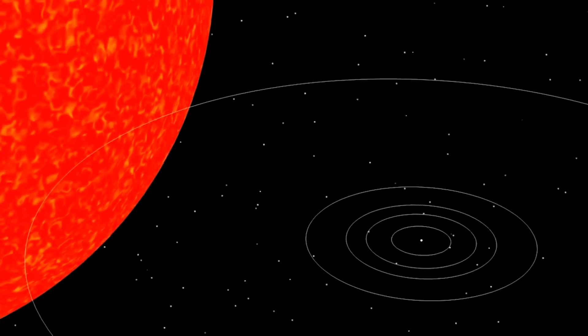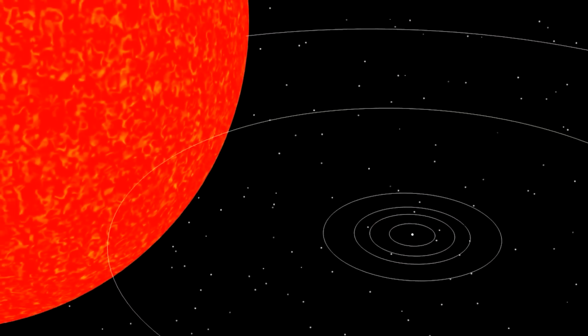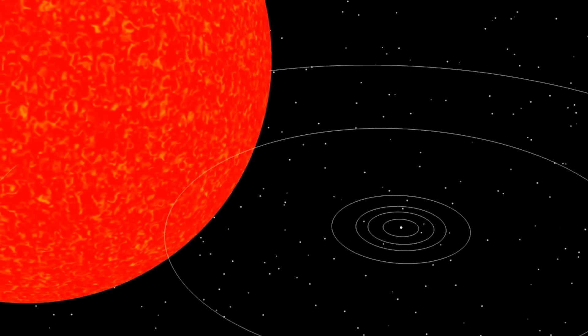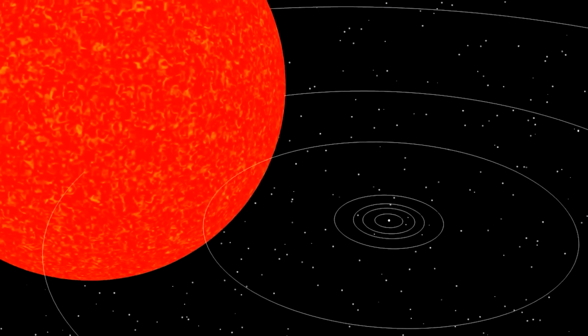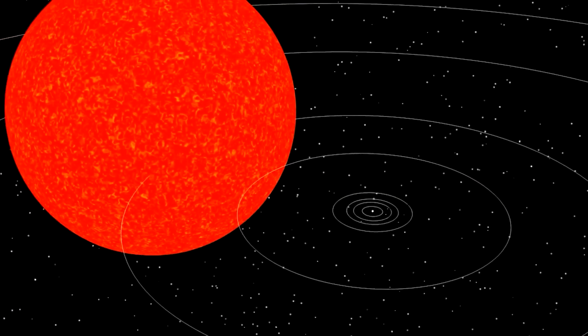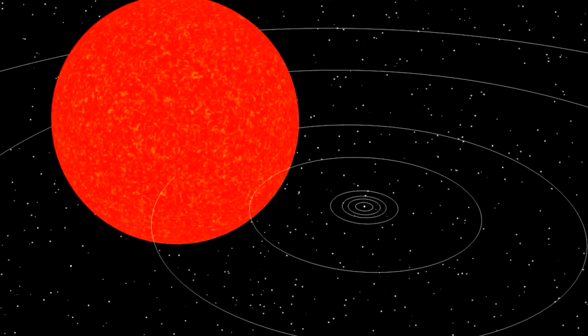Enter Betelgeuse. If our sun were a marble, Betelgeuse would be a beach ball. Its diameter is approximately 800 times that of the sun, a scale so vast that it's challenging to truly grasp.